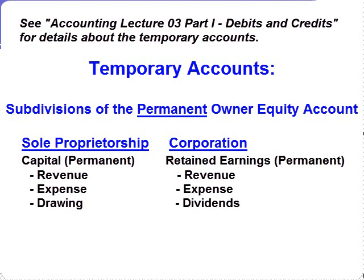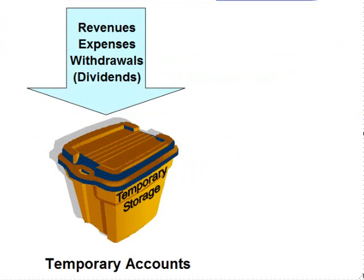The temporary accounts are the revenue, the expense, and then in the case of a sole proprietorship, the drawing account, or in the case of a corporation, the dividends account. We use these temporary accounts to record transactions that could have been recorded in the permanent owner equity account — capital in the case of a sole proprietorship, or retained earnings in the case of a corporation. We did this so it would be easier at the end of the accounting period to determine revenues, expenses, withdrawals, and dividend payments for the income statement, statement of owner's equity, and statement of retained earnings.